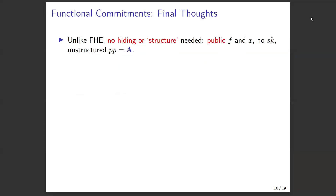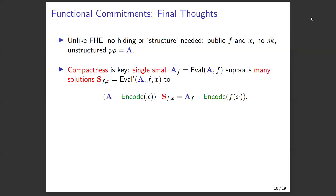Final thoughts on functional commitments: unlike FHE, everything here has no hiding needed, no secret key embedded in the structure. The public parameter is just an unstructured random matrix; f and x are all public. This doesn't look much like FHE but it is homomorphic computation arising from an FHE scheme. Compactness is the critical feature — one small A_f or C_f supports many different openings for all x's in the domain of the function.